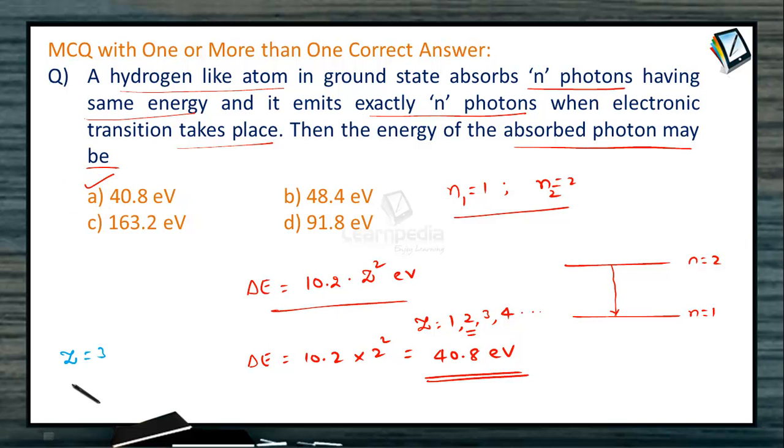If we take Z=3, then ΔE = 10.2 × 3² = 10.2 × 9 = 91.8 eV. This is also possible energy of the photons, where option D is 91.8 eV. Therefore, D also becomes an option.